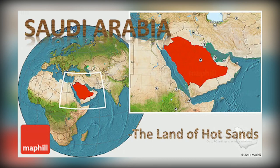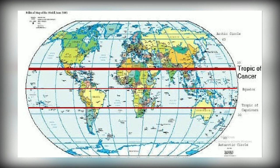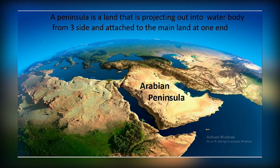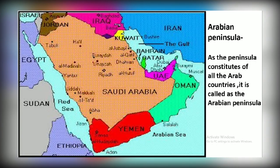Today we will be studying about the land of Saudi Arabia. Saudi Arabia is a large country located above the equator. The Tropic of Cancer passes through the middle of Saudi Arabia. It is a country in Western Asia and the major part of the Arabian Peninsula. A peninsula is a land that projects into a water body from three sides except one. It is called the Arabian Peninsula because it constitutes all the Arab countries.